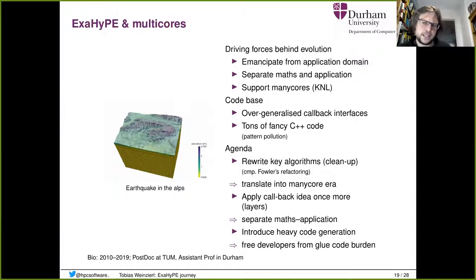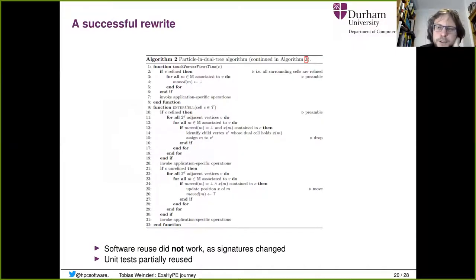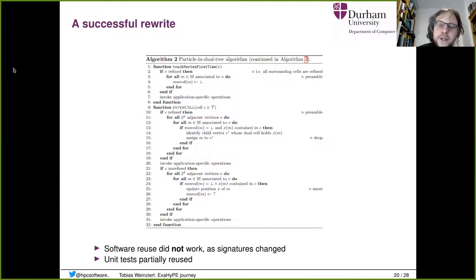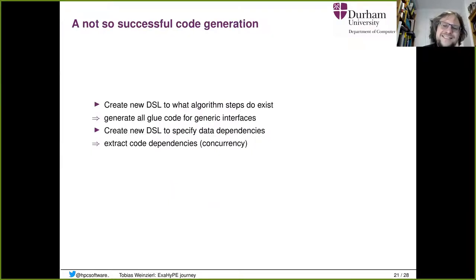Users could really focus on their equations, and we'd heavily rely on code generation — not fancy object-oriented stuff, but code generation originally written in Java that creates all the glue code. The rewrite worked out brilliantly this time because we had formalized descriptions and pseudocode that were well documented — there's a CISC paper on Peano which exactly describes how the core algorithms work. It wasn't code reuse; it was algorithm reuse. The code generation, however, didn't work down that well — we created all the glue code and people didn't like it.